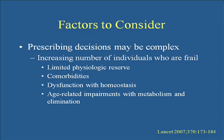Frail people represent an increasing number of individuals. They can have limited physiologic reserve, comorbidities that factor into medication selection, dysfunction with homeostasis, and age-related impairments with metabolism and elimination. Of all pharmacokinetic aspects that change with age — absorption, distribution, metabolism, elimination — the most important to consider is elimination, which ties mainly to renal function. Medications that undergo renal elimination are the ones that consistently and across the board can be affected by age.